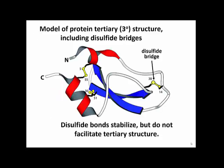Here's our three-dimensional model of a polypeptide showing the tertiary structure, but here including some disulfide bridges. There are actually — I see one, two, three here. The one I'm pointing to is actually linking two bits of random coil in this polypeptide.